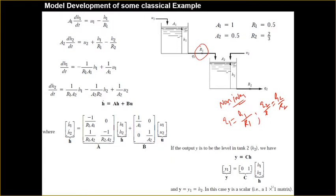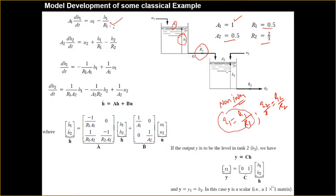Based on this dynamics, the area of tank one is given in meter square or centimeter square, area two is given, R1 and R2 are given. For tank one, we write A1 times dH1 by dt, which equals the inlet flow Q_in minus Q1, and the value of Q1 equals H1 by R1.